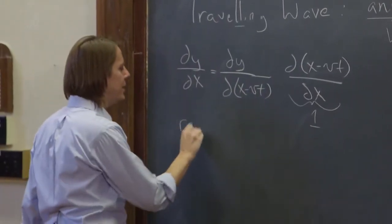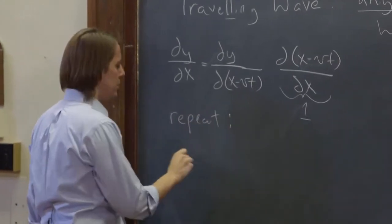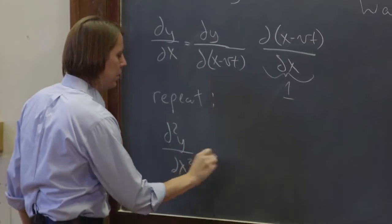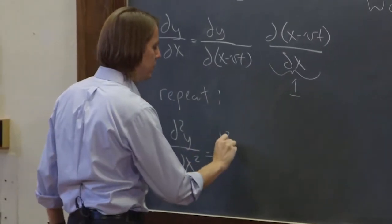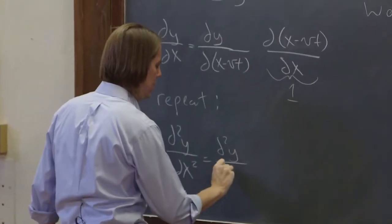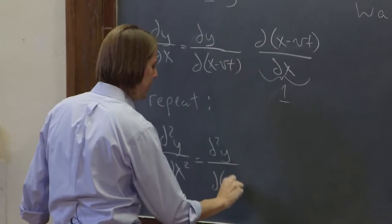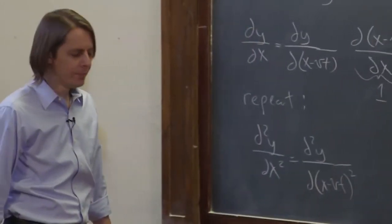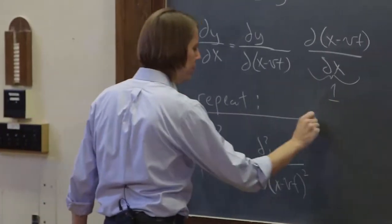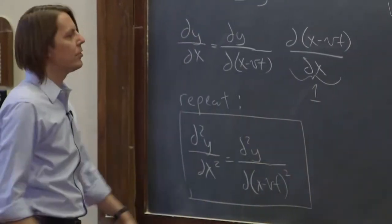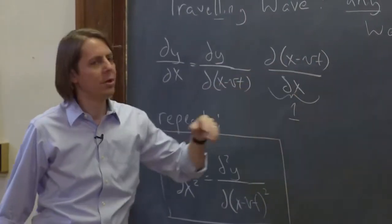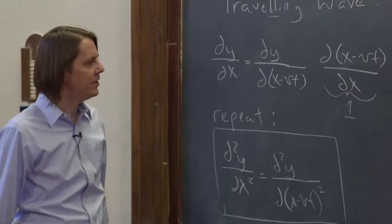And then if you repeat, you can show that d²y/dx² is d²y/d(x-vt)². So it's also true for the second derivative. So let's put a line around that. And it only works because your function, whatever it is, only shows up with an x minus vt.